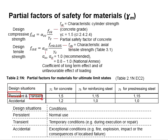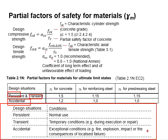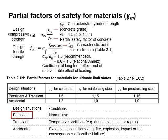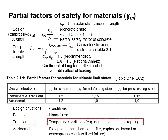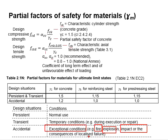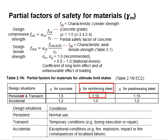The definitions of these terms are given here. The persistent design situation refers to normal use. The transient situation refers to temporary conditions such as during excavation or repair. As for the accidental, it is referring to exceptional conditions such as fire, explosions, impact, or the consequences of localized failure. The partial factor of safety for reinforcing steel is 1.15 for transient and persistent conditions.